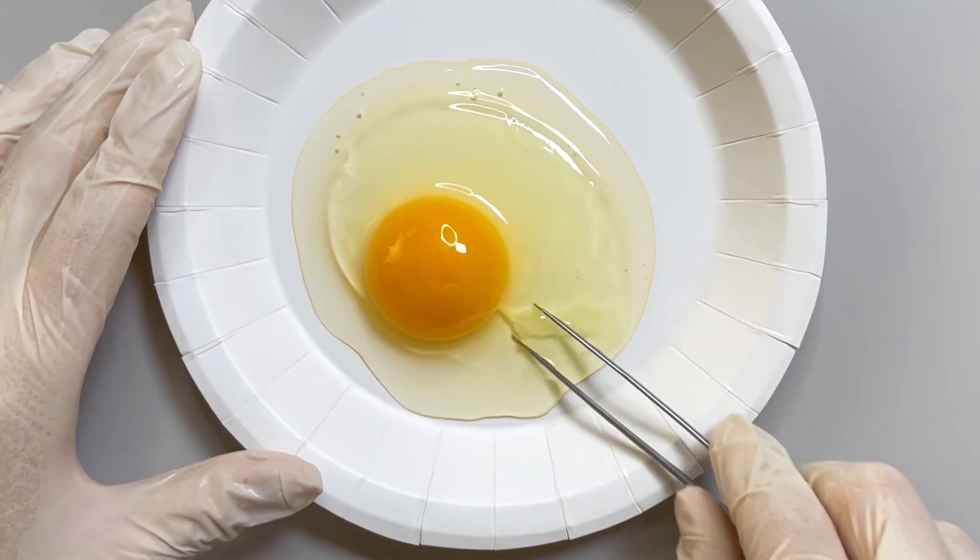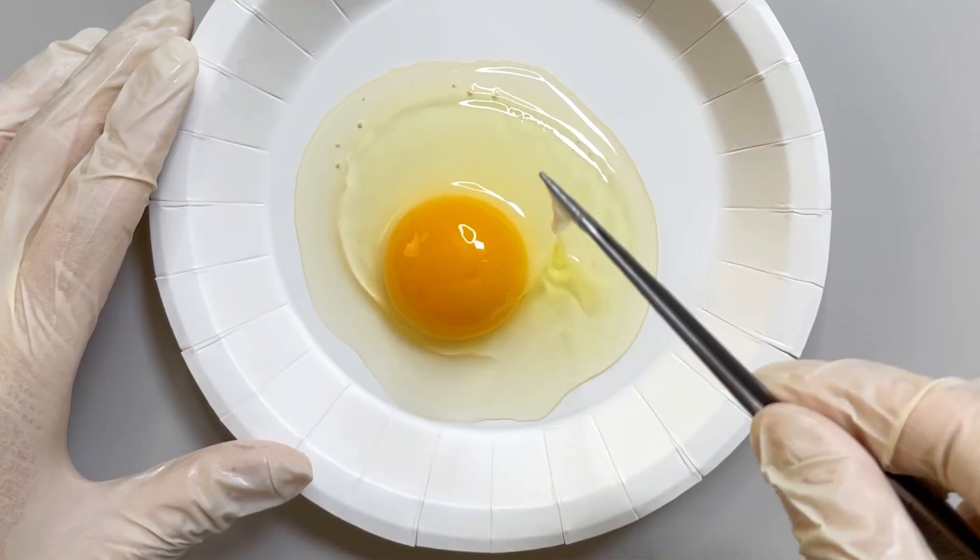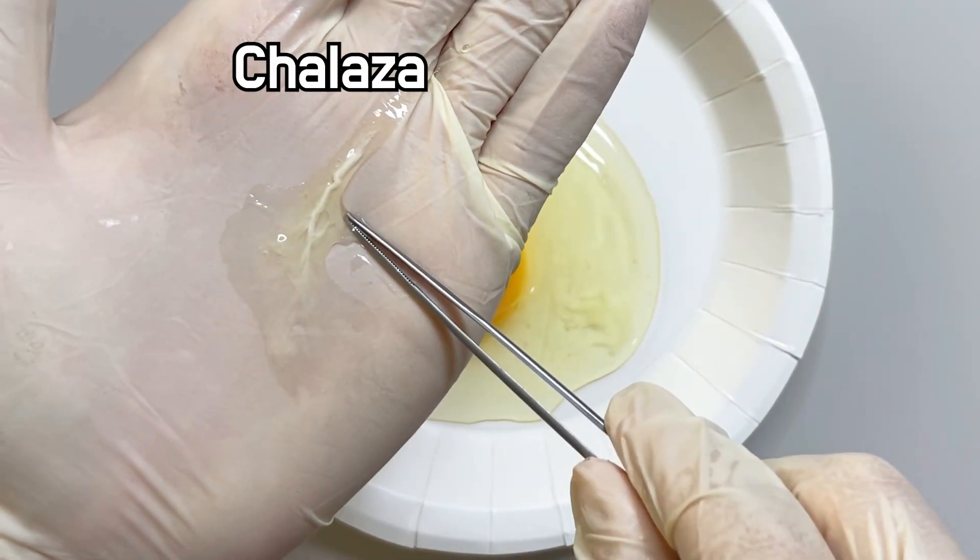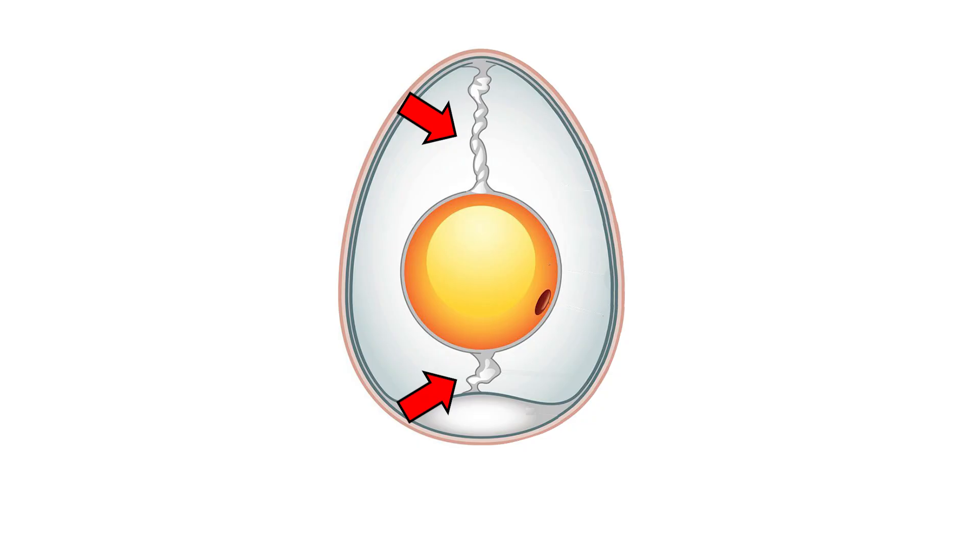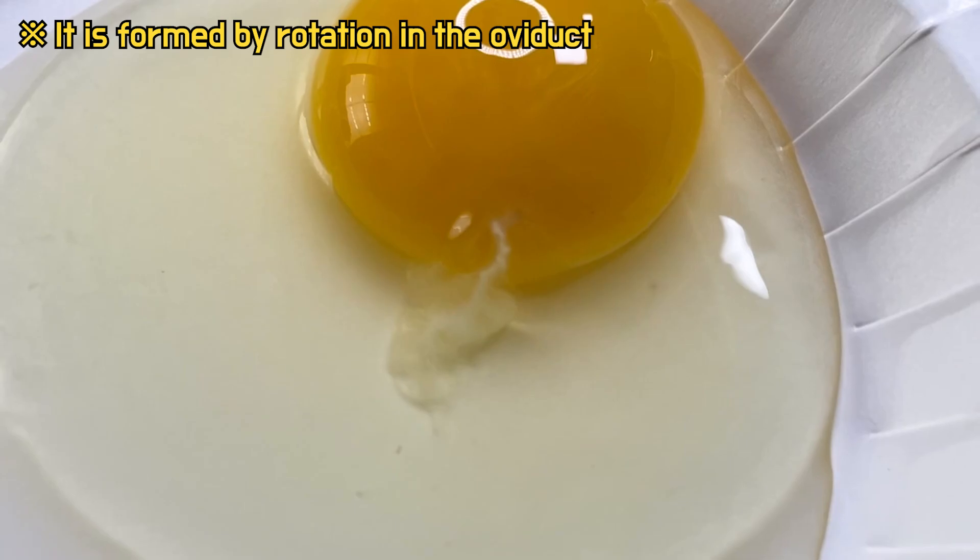Furthermore, when you look at the contents inside the egg, you can see a white string-like substance. This part is called the chalaza, a structure that anchors the yolk in the center. If we look closely, it has a twisted shape.